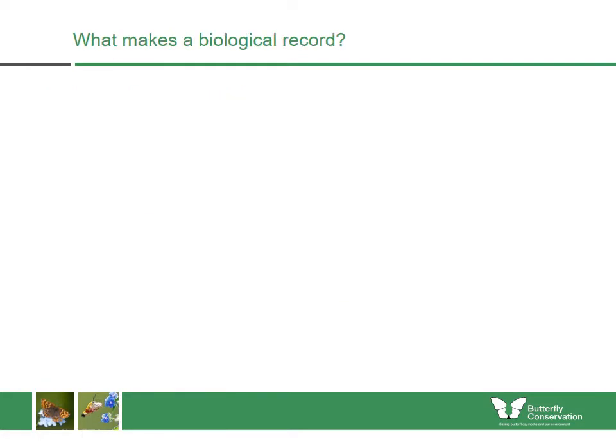So when you make a record of a butterfly, you're actually making a biological record. This requires a date, a location, and the species name — and I'll show you how to find those in different methods now.